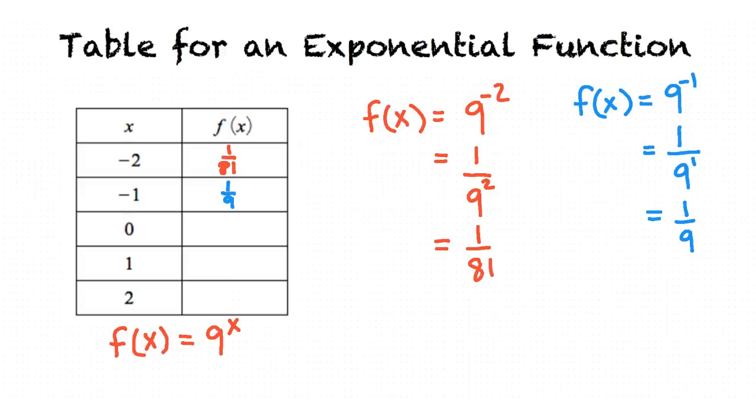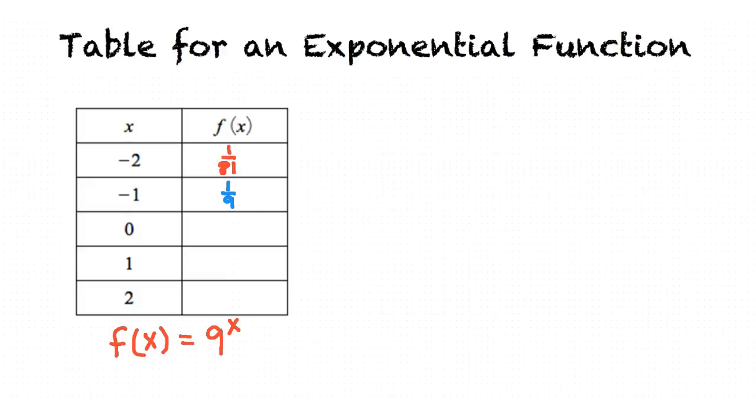For the next one we plug in 0 for x and solve for f of x. When we substitute 0 into the equation isn't 9 to the 0 just 0? No, because according to the exponential rule any number that is raised to a power of 0 equals 1. Therefore, 9 to the 0 is 1.